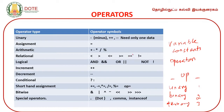Relational operators return a boolean result — true or false. The equality test uses double equal (==), while single equal (=) is the assignment operator. Be careful: single equal stores a value, while double equal compares the left-hand side and right-hand side.